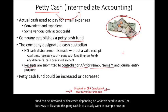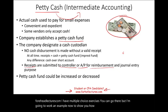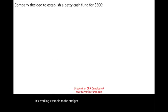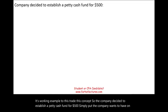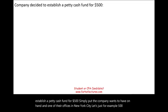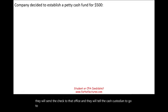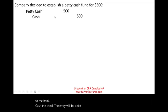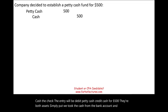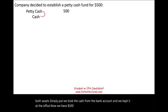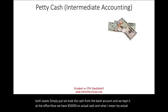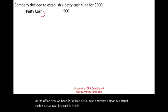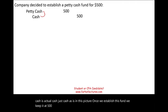On my farhatlectures.com, I have multiple choice exercises, but let me work through an example now to show how this all fits together. The company decided to establish a petty cash fund for $500 — they want to have cash on hand at their New York City office. They send a check, the cash custodian goes to the bank and cashes it. The journal entry is: debit petty cash, credit cash for $500. They're both assets — we simply took cash from the bank account and kept it at the office.